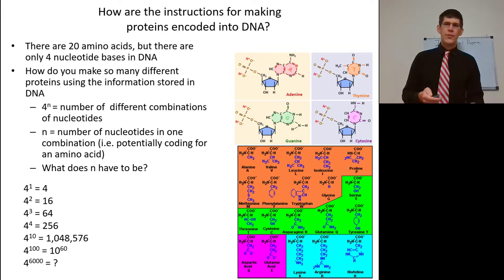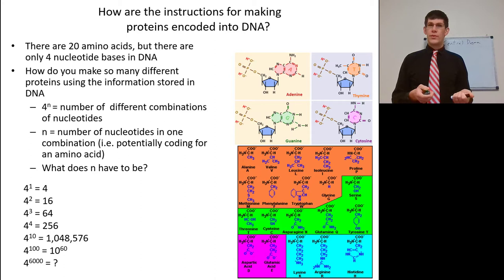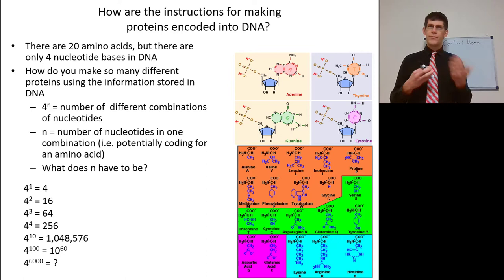How are the instructions for making proteins encoded in DNA? Well, there are 20 amino acids, but only four nucleotide bases in DNA: A, T, G, and C. In RNA, it's A, U, G, and C. So how do you make so many different proteins given only so many different DNA nucleotides?